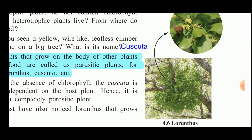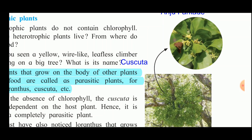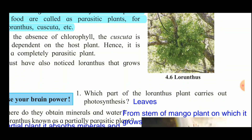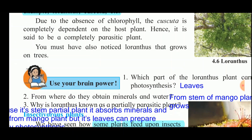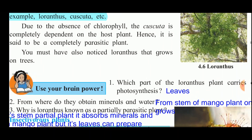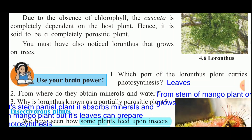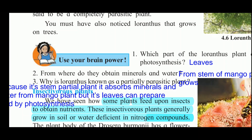The question arises: which part of the Loranthus plant carries out photosynthesis? In the figure, the Loranthus plant growing on the mango tree is shown. Loranthus has leaves, so its leaves carry out photosynthesis. But why is it still a parasitic plant? Because it is a stem partial plant — meaning it does not have a stem.